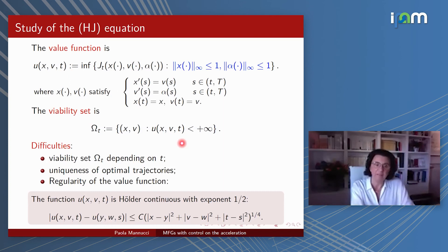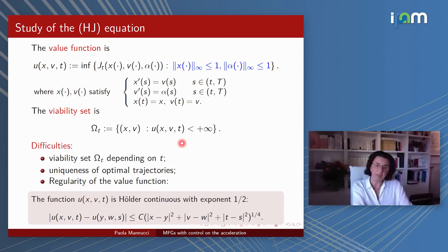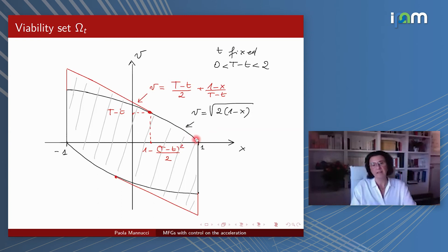Due to the constraint, we cannot prove uniqueness of optimal trajectories — a key point in the previous result — nor can we prove the same regularity of the value function. In particular, we only obtain Hölder continuity with exponent 1/alpha with respect to the variables x, v, and t. The viability set in our example changes with t: on the upper and lower boundaries we have a red line and black parabola.